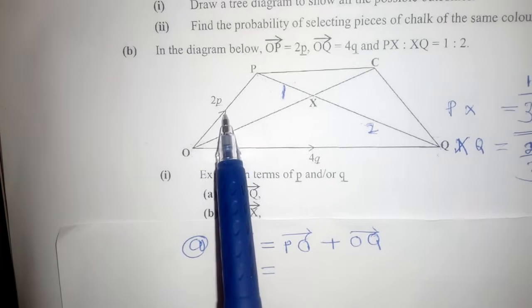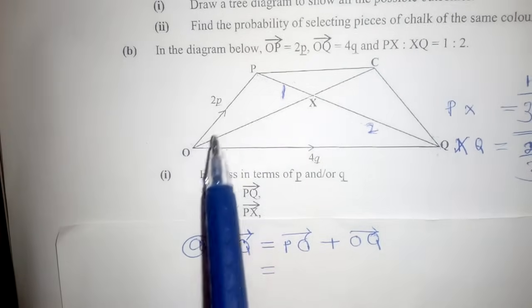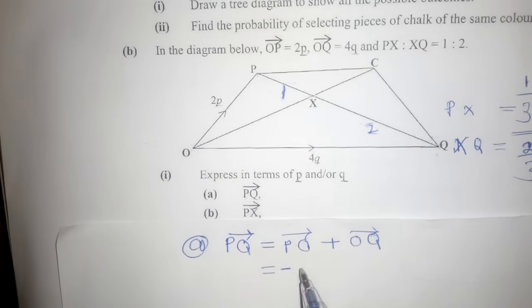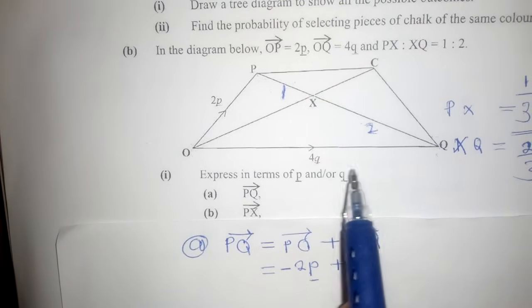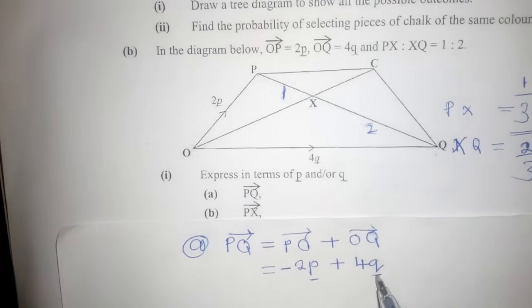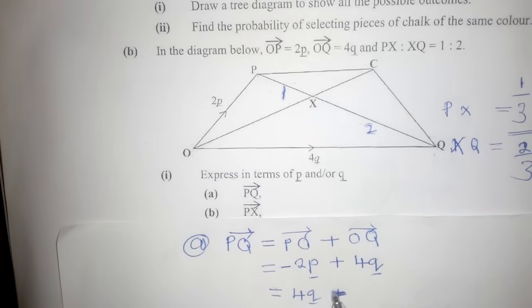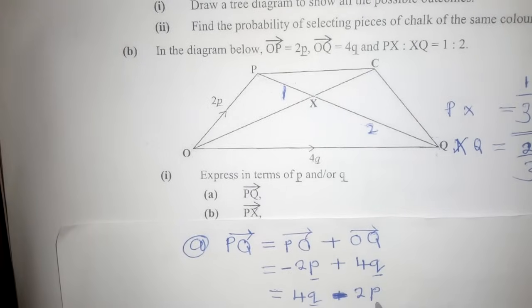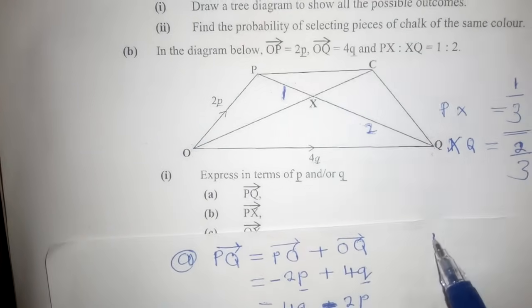Remember what I said about direction — the arrows are very important. Here the arrow shows vector OP, but we want PO, so we change the sign to show we are moving in the opposite direction. We put a negative, giving us negative OP plus OQ. We rearrange to avoid starting with a negative sign, so our answer is OQ minus OP.